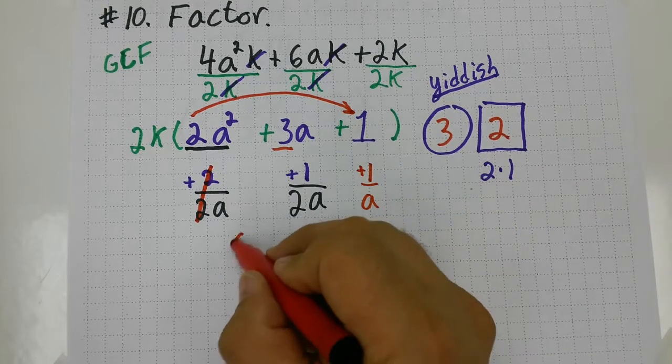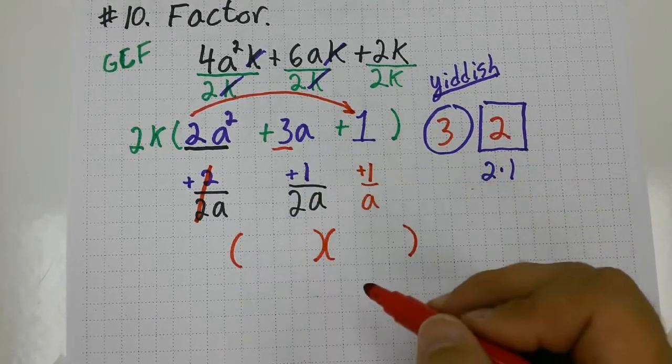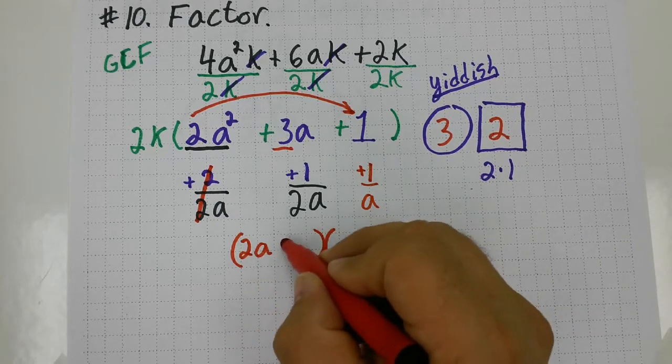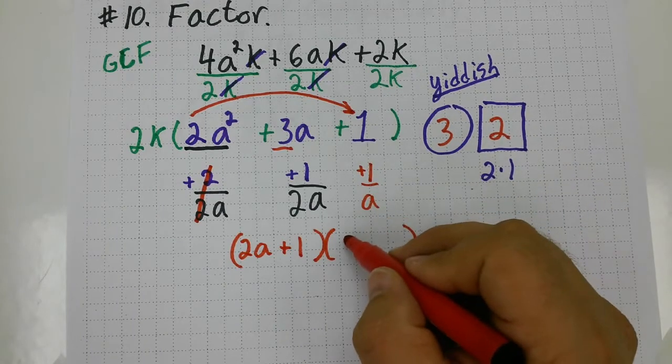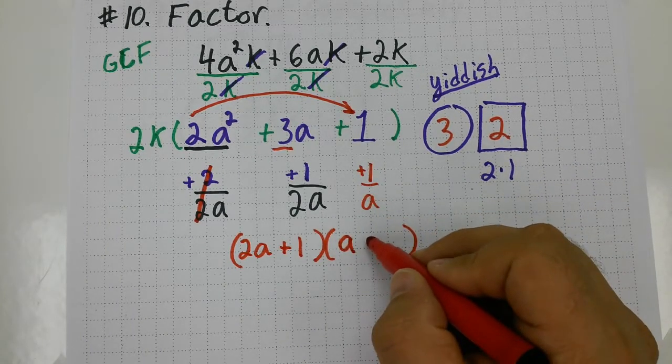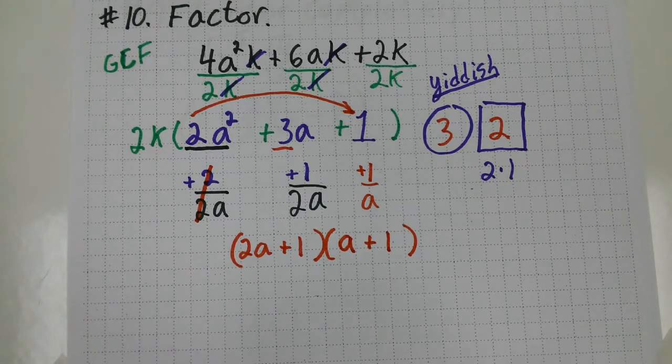Now, when I set up my factors, this 2a with a 1 on top is going to be a factor of 2a plus 1. And this 1 over a is going to be a factor written down as a plus 1. Now, I can't forget about my original 2k that's out front.